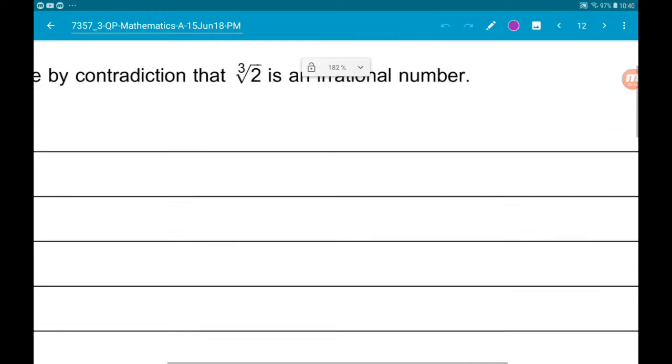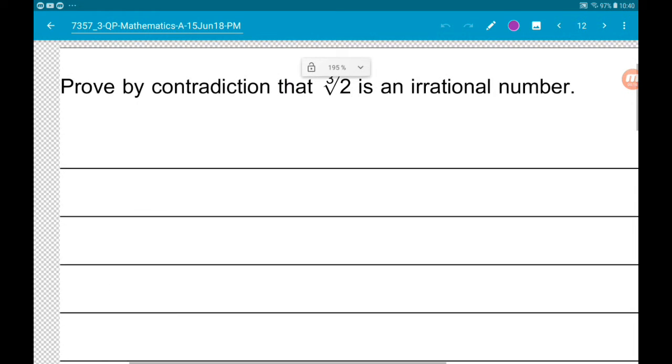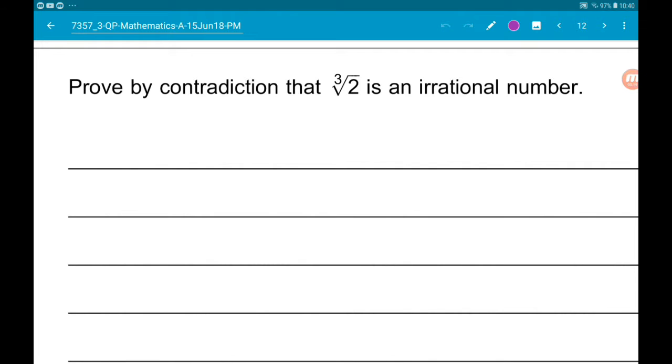First step with proof by contradiction: always assume the opposite of what you're trying to prove. So we're going to assume the cube root of 2 is rational.